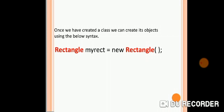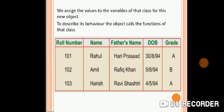Once we have created a class we can create its object using the syntax shown. For example, 'myRect' is an object of the Rectangle class. We assign values to the variables of that class for this new object. For instance, the Students class contains variables such as roll number, name, father's name, grade, etc. The class will also contain functions that register student details, calculate fees, and display grades. Here lies the advantage of object-oriented programming.